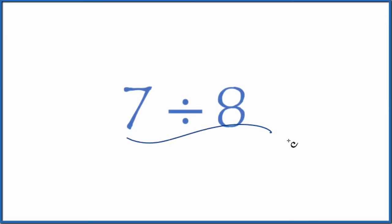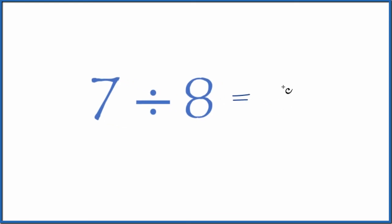If you're asked to divide 7 by 8, here's how you do it. Let's first think about it as a fraction. That would be 7 over 8, seven-eighths. So when we divide 7 by 8, we could say we have the fraction seven-eighths.